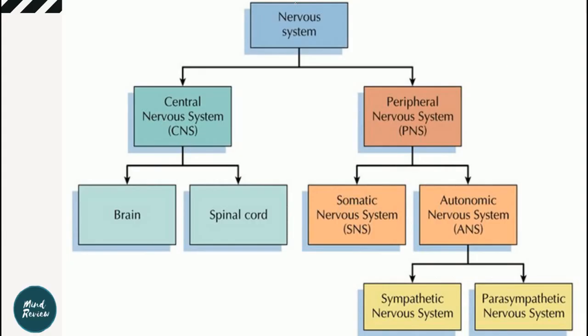This is a small flowchart that describes the nervous system. Our nervous system consists of the central nervous system and the peripheral nervous system — these are both the main divisions of the nervous system.